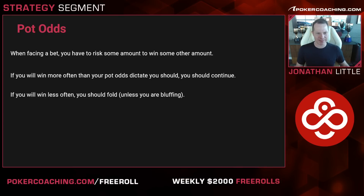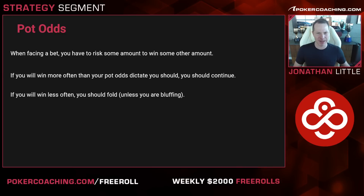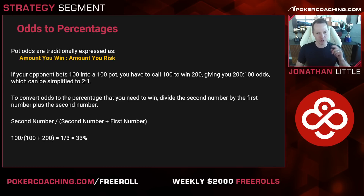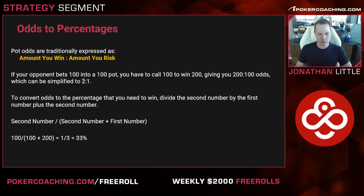When you are facing a bet, you have to risk some amount of money or chips to win some other amount. Pot odds are traditionally expressed as the amount you win to the amount you are risking. For example, if your opponent bets 100 into a 100 pot, you have to call 100 to win 200 — you're putting in 1 to win 2. This gives you 200 to 100 odds, which simplifies to 2 to 1 odds.